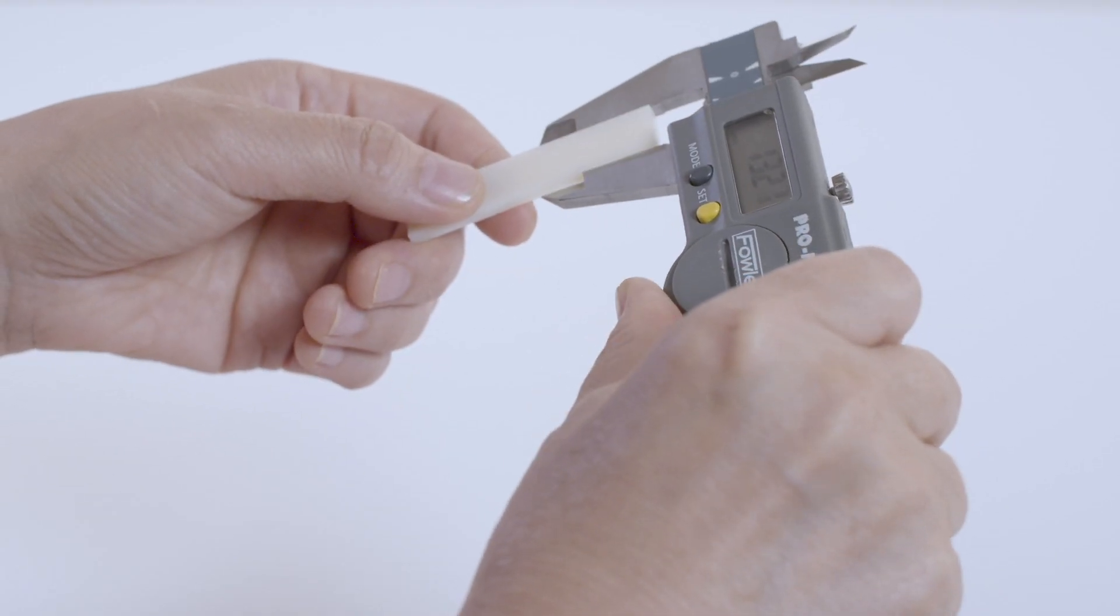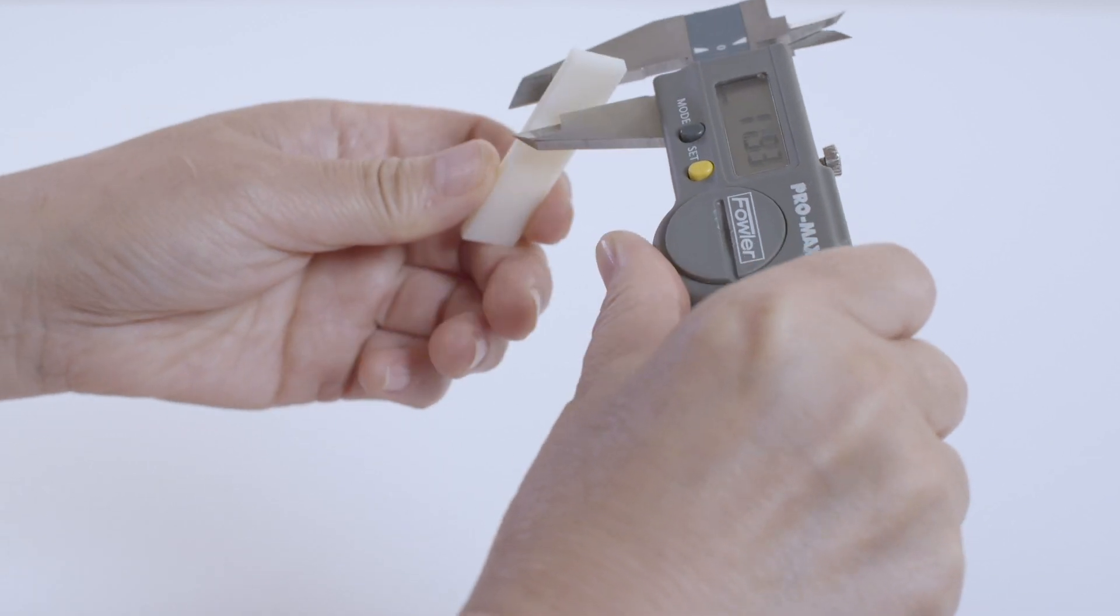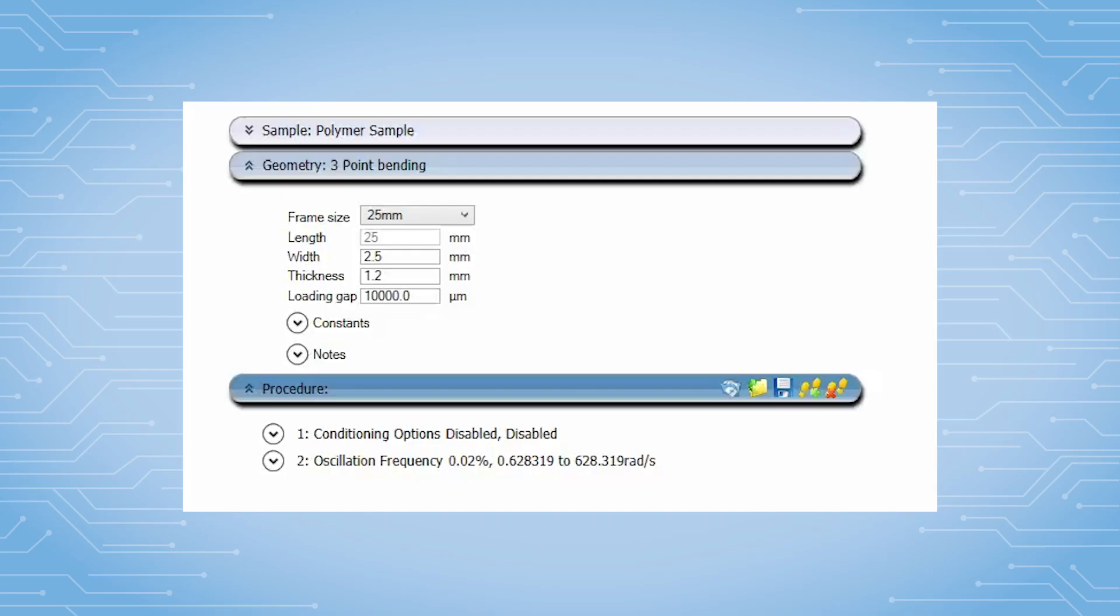Use a caliper to measure the sample width and thickness. Enter the sample dimension into the geometry file in TRIO. The sample length is the span of the bottom frame.